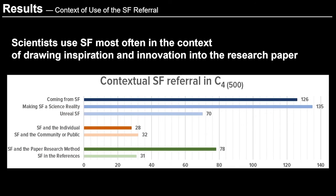With regards to the context of use of the science fiction referral, we have some interesting results. Looking at the three larger categories, it clearly shows that scientists use science fiction most often in the context of drawing inspiration and innovation into the research paper. The most frequent subcategories are research papers discussing making science fiction a science reality — concepts already realized or close to realization — followed by a large group of 126 papers discussing concepts first envisioned in science fiction, and 70 papers discussing unreal science fiction concepts, such as time travel.